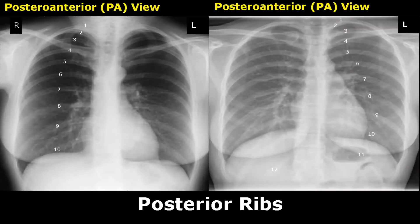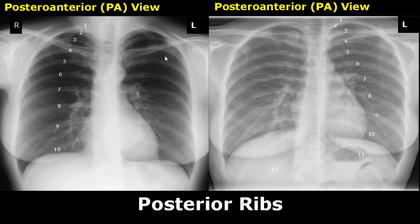Hello everyone, this is Dr. Sam and today we will study chest x-ray normal anatomy. Here we have PA views of the chest. The dense structures such as bones appear radiopaque or bright, and the low density structures appear dark or radiolucent.